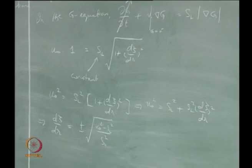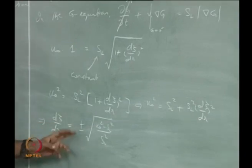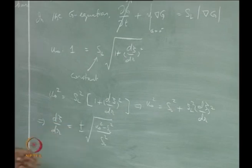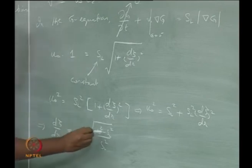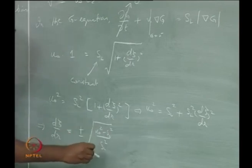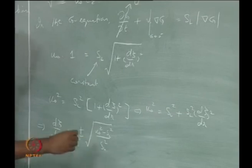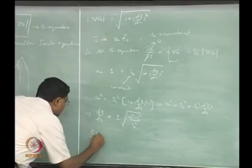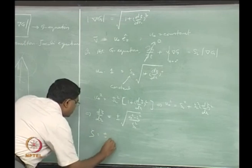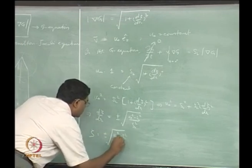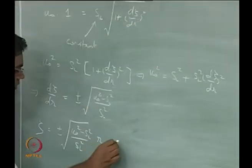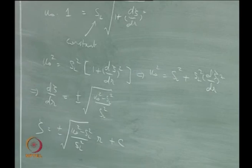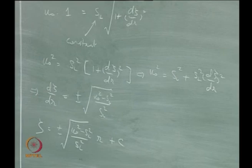We now choose between plus and minus shortly. Since U0 and SL are constants, the square root of (U0² − SL²)/SL² is a constant. Integrating: Zeta equals plus or minus the square root of (U0² minus SL²) divided by SL² times r, plus an integration constant. That means we need to supply a boundary condition.